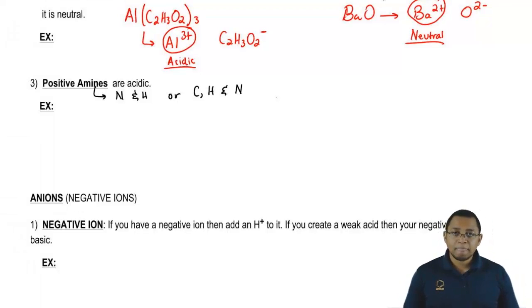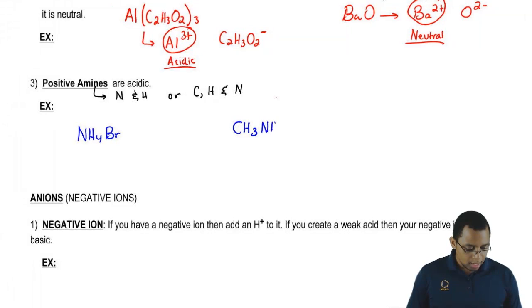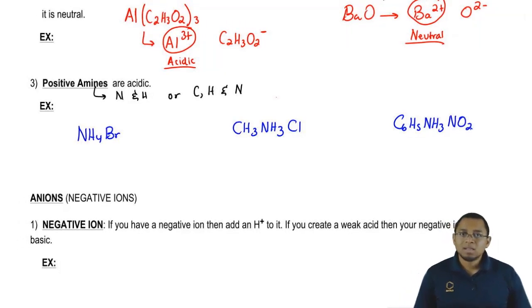Positive amines are acidic. Let's think of some examples here. We could have NH4Br, we could have CH3NH3Cl, we could have C6H5NH3NO2, all different examples.